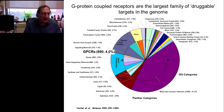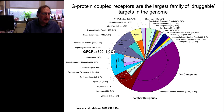By way of background, G-protein-coupled receptors represent the largest family of druggable targets in the human genome. This is a pie chart of the genome published many years ago, still very current. G-protein-coupled receptors, which number around 900, represent approximately 4% of the open reading frames encoded by the human genome, and by far and away represent the largest family of druggable targets in the human genome.